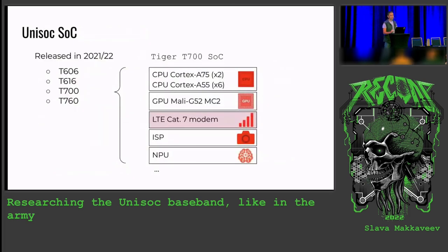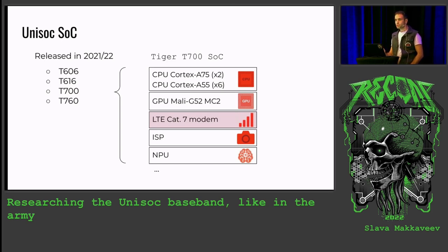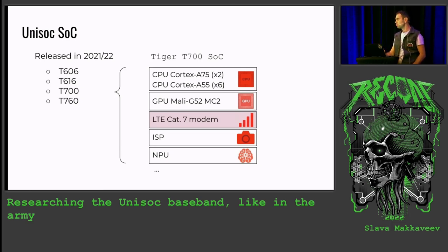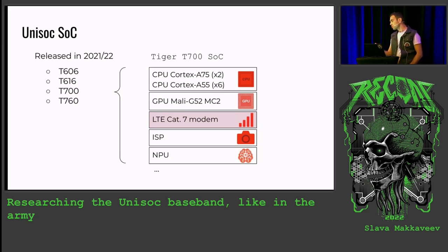The world is already accustomed to seeing a special set of custom processors on a mobile SOC. In this, Unisoc is not much different from other manufacturers. For example, the Tiger T700 SOC, which is one of the newest Unisoc products, contains eight CPU cores on which Android runs, plus a graphics processing unit, image signal processor, neural processor unit, and of course a radio modem.